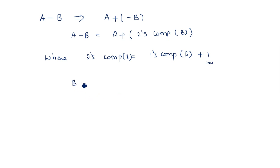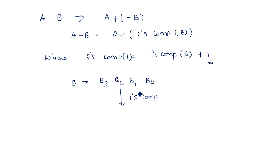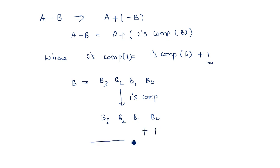The two's complement of B equals the one's complement of B plus 1. That means we add 1 to the one's complement of B. Suppose B has bits B3, B2, B1, B0. We need to apply one's complement to all these bits. One's complement means changing 1s to 0s and 0s to 1s. After this, the resultant number B3, B2, B1, B0 should be added with 1, giving you the two's complement number.